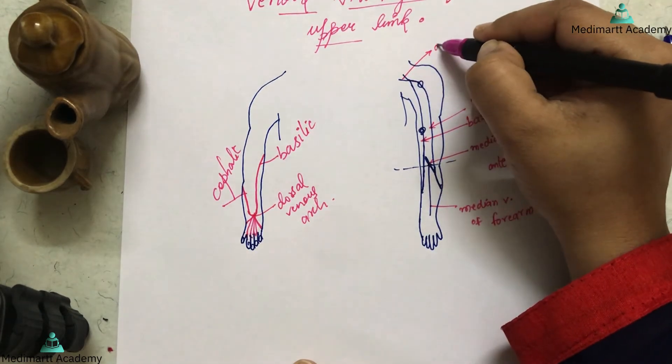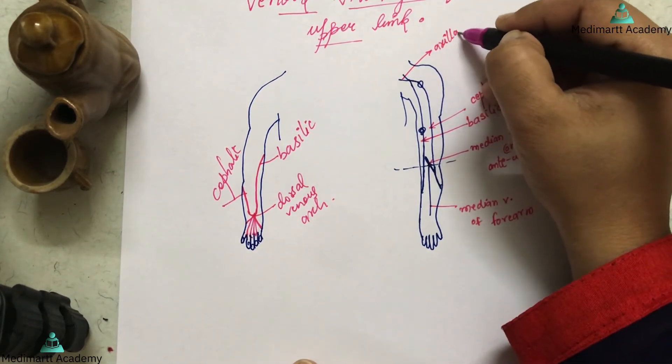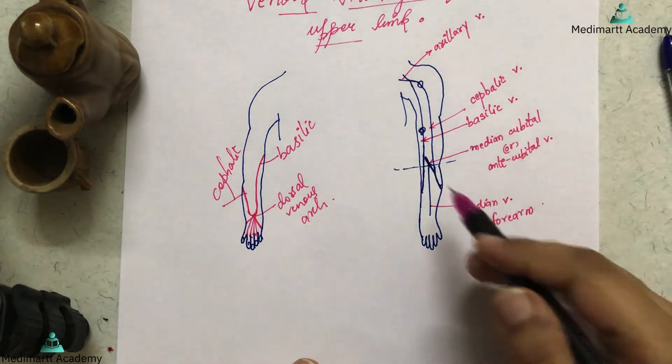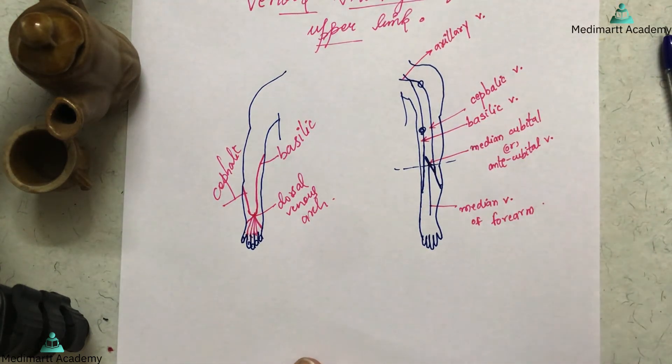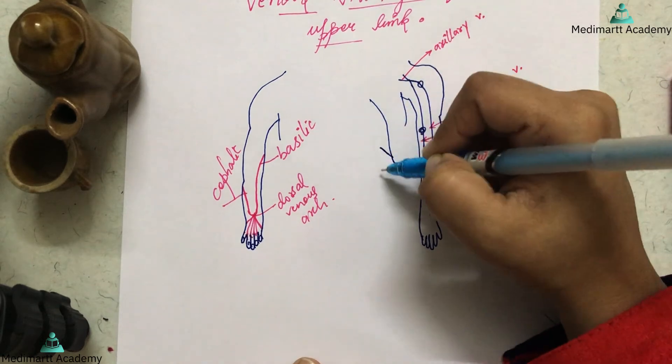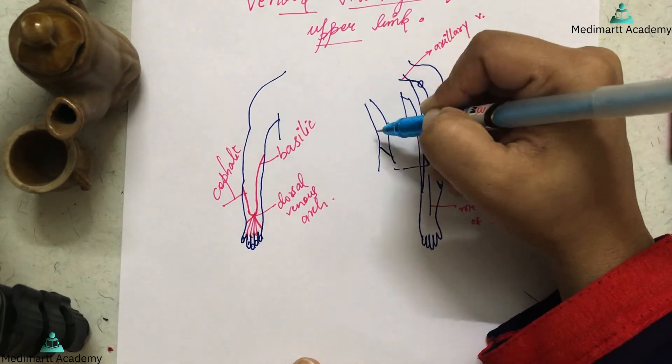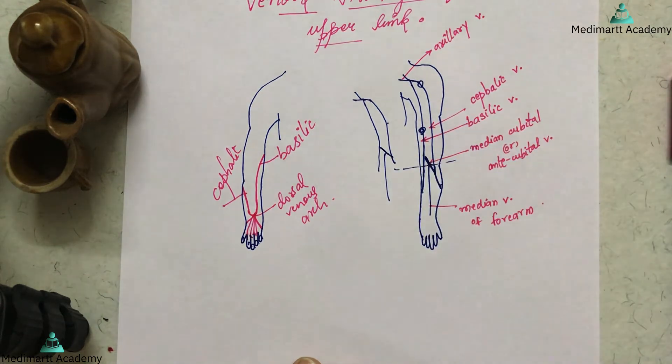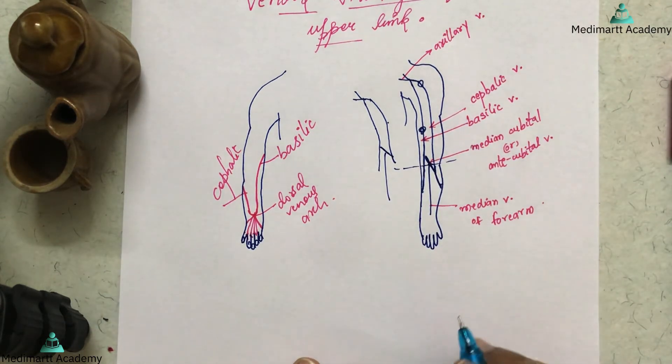This is your axillary vein. As I told you earlier, all these veins drain into the axillary vein. This is your venous drainage. This is going to be very easy. You just have to mark the median cubital vein, one vein from here, one vein from here. This is the cephalic, this is the basilic, they drain into the axillary, and this is the median vein of the forearm. Simple.